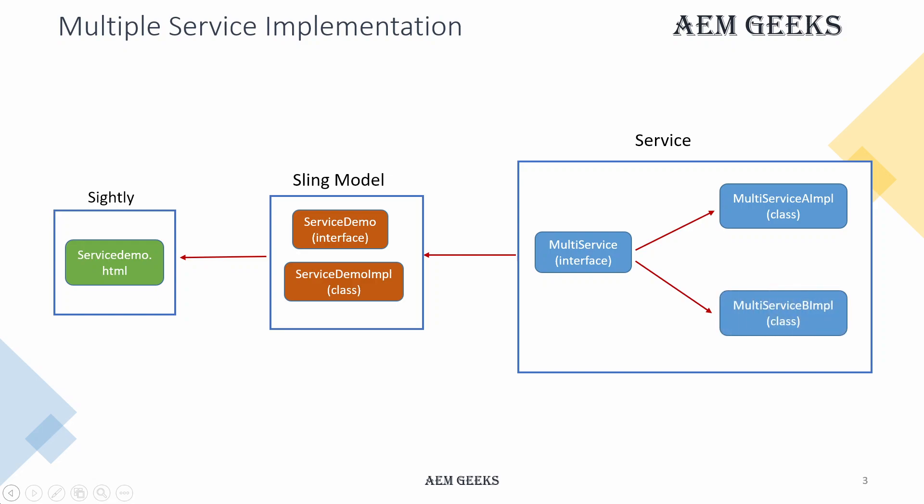When you have more than one implementation of an interface — say a MultiService interface — and we already have an implementation class MultiServiceA, now I wrote one more class also implementing that interface. Both classes have the method getName(). When we call this service, which implementation class will be called? If you do not define anything and you have two implementation classes, the older service will be referred to — the one with the lesser service ID.